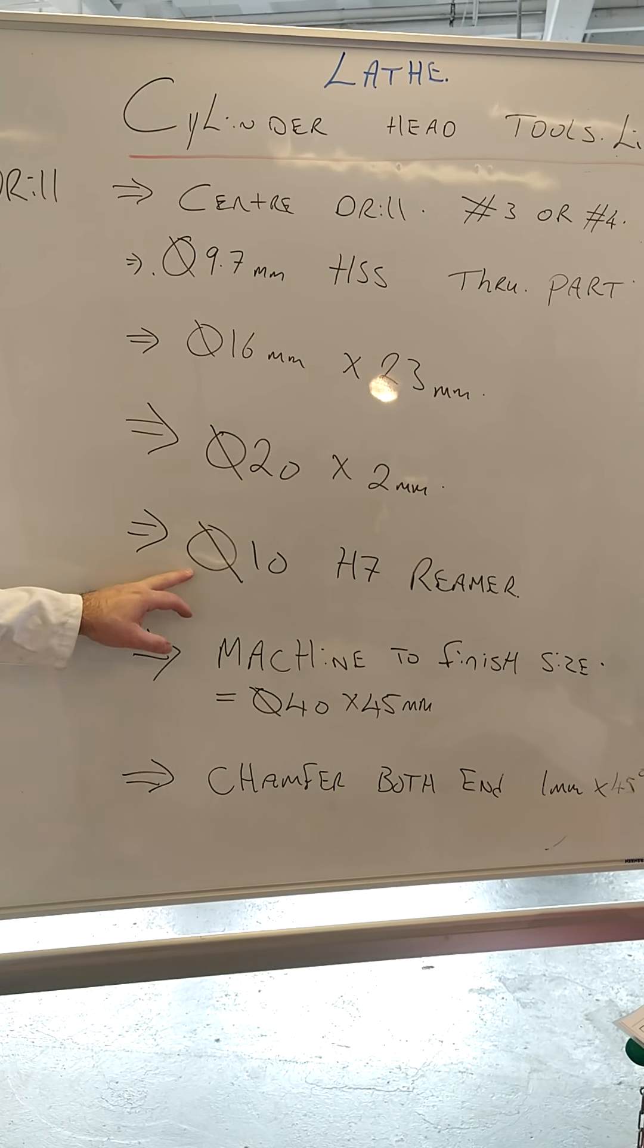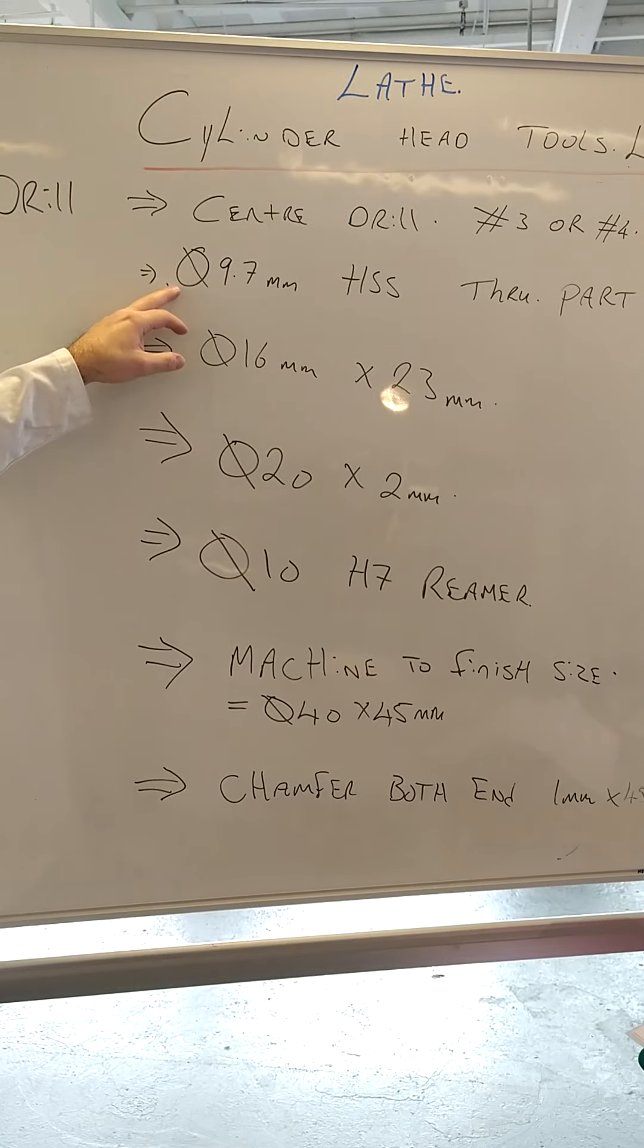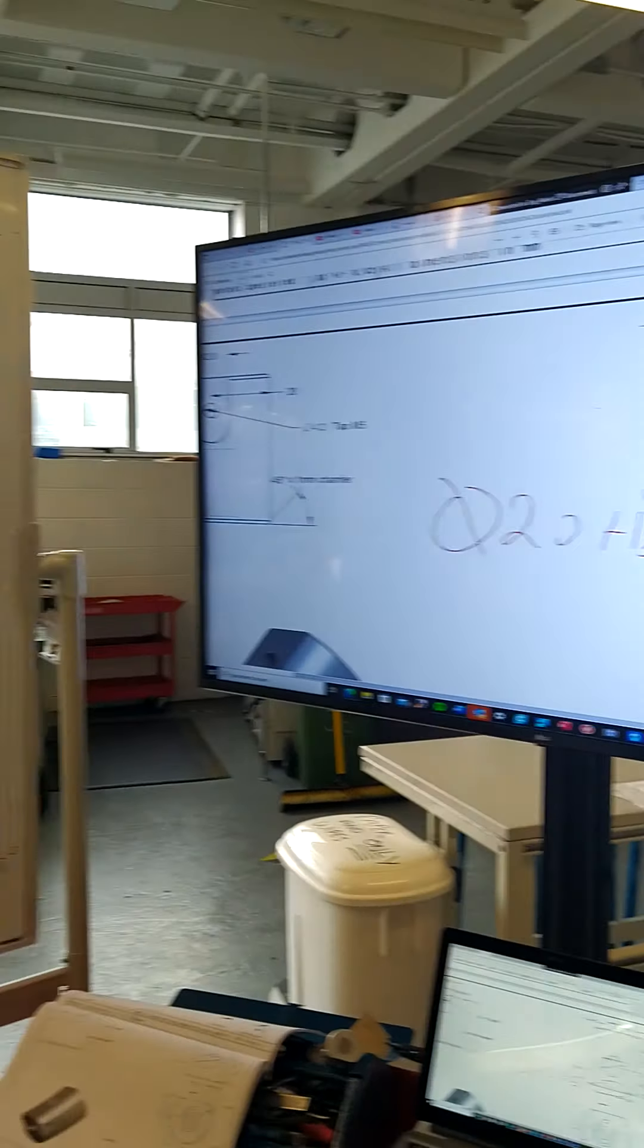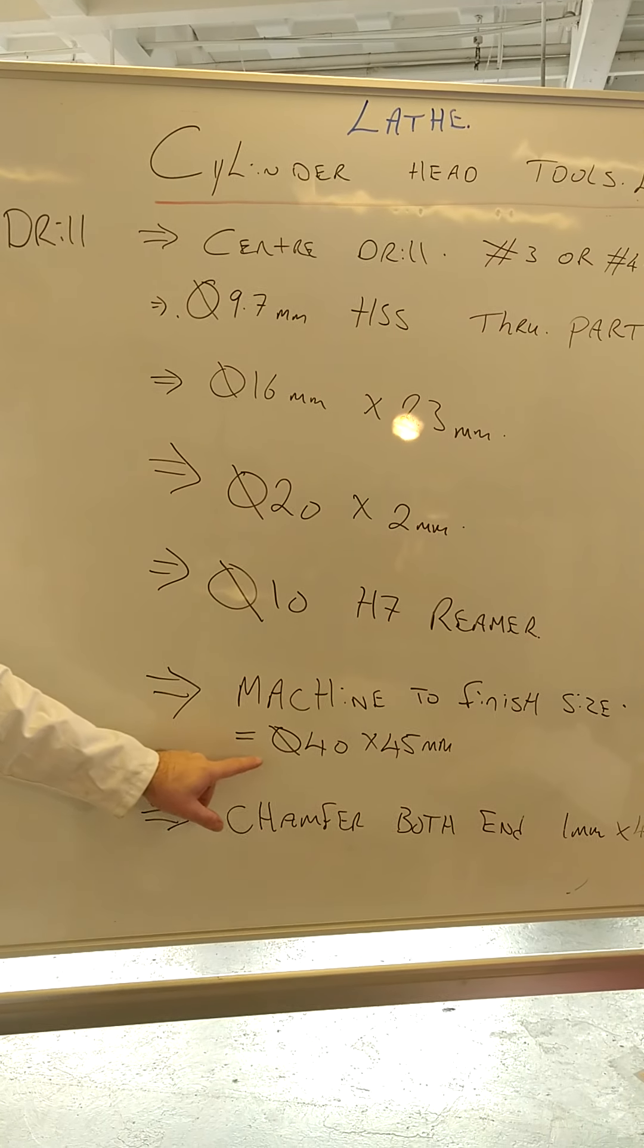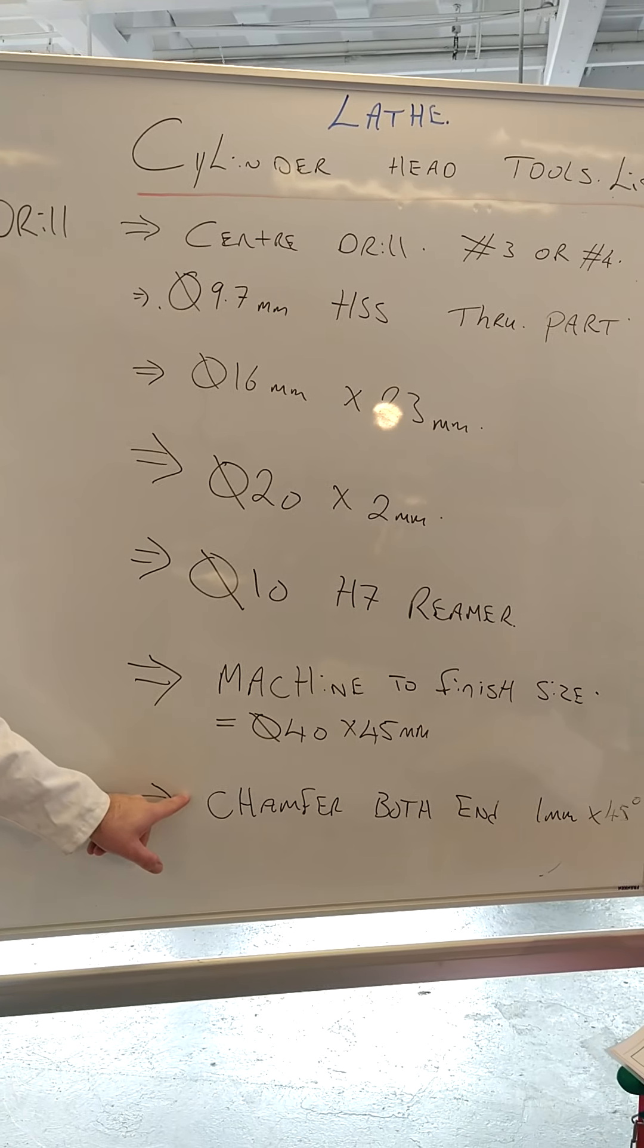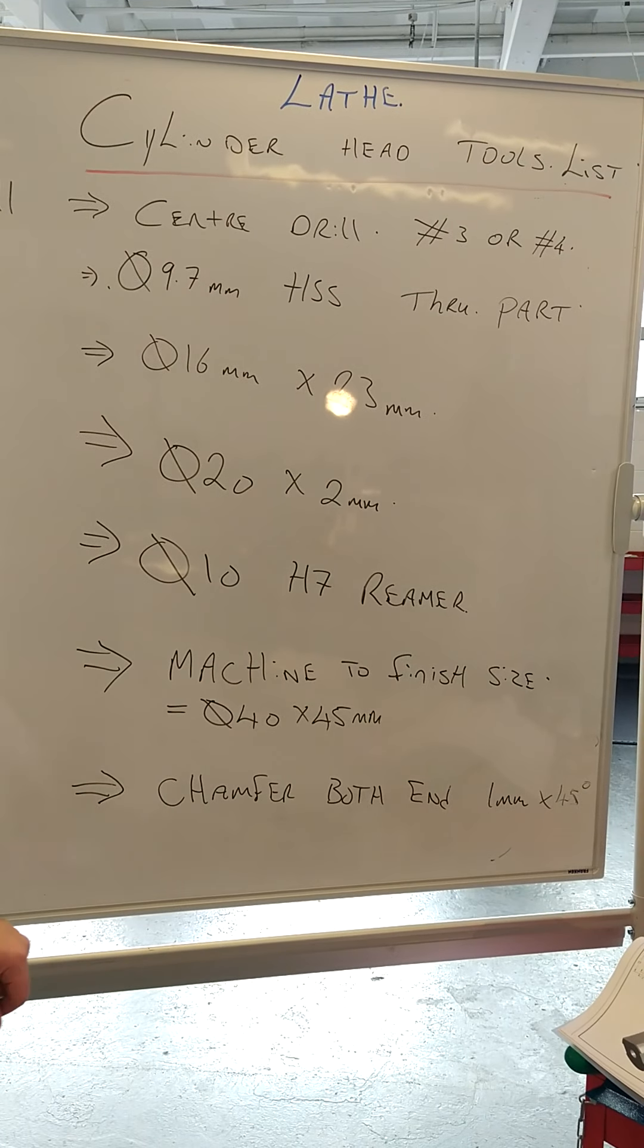And then a diameter 10-8-7 reamer to ensure it's the correct fit at the back end of the hole. Followed by then, we're going to bring the part down to the finish length of 40 by 45. And finally then, complete the work on the lathe. We're going to put a 1 millimeter chamfer at 45 degrees on both sides of the part.